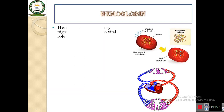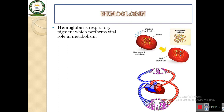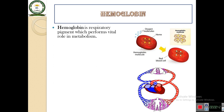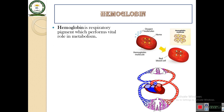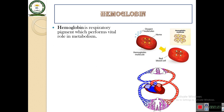Hemoglobin is a respiratory pigment which performs a vital role in the metabolism. Hemoglobin is called a respiratory pigment because it carries oxygen for respiration, which performs the vital role in metabolism.